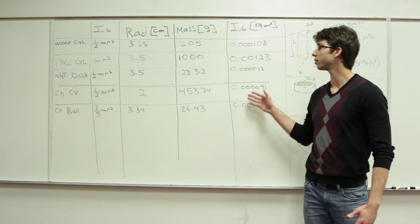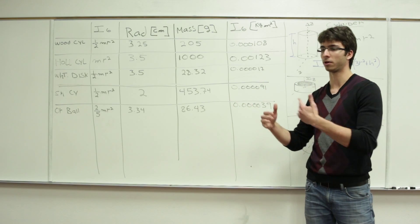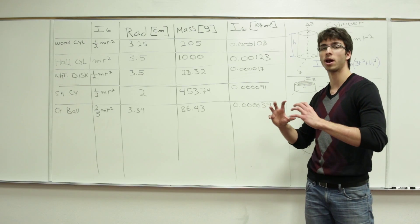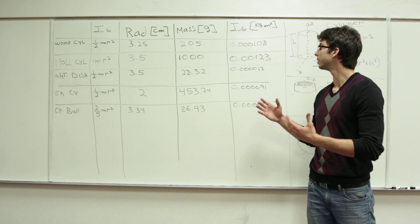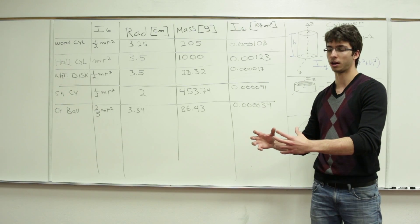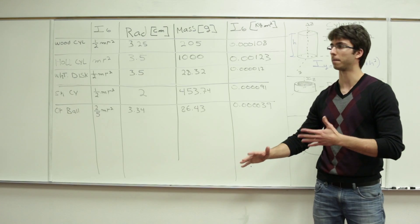From these calculations, we could predict which object will roll faster or slower. And when we actually race the two of them, depending on which one has the lowest moment of inertia, that one should reach the bottom of the ramp first.